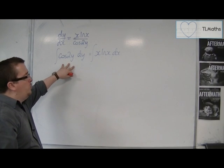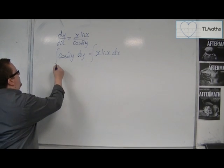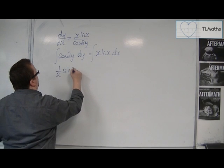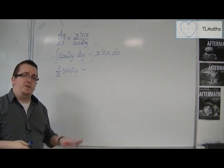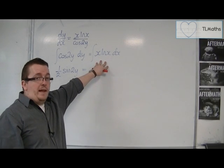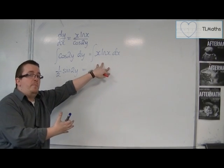Now the cos 2y dy will integrate to 1 half sine 2y. Now that's the left hand side, but the right hand side, x log x, I'm going to have to use integration by parts to do it.